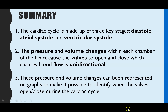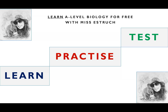In summary, the cardiac cycle has three stages: diastole, atrial systole, and ventricular systole. Pressure and volume changes within each chamber cause the valves to open and close, ensuring unidirectional blood flow. These changes can be represented on a graph so you can identify when valves are open or closed. Head over to missestrich.com and go to the practice questions, topic three, for questions to test your knowledge. If you found this helpful, please give it a thumbs up.